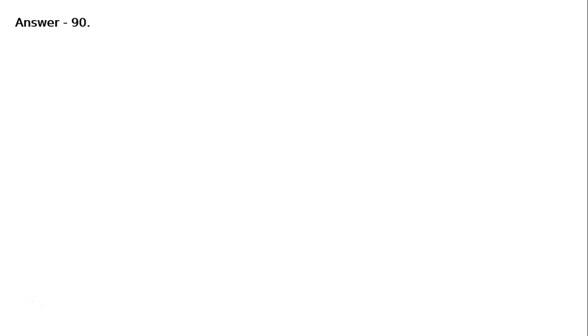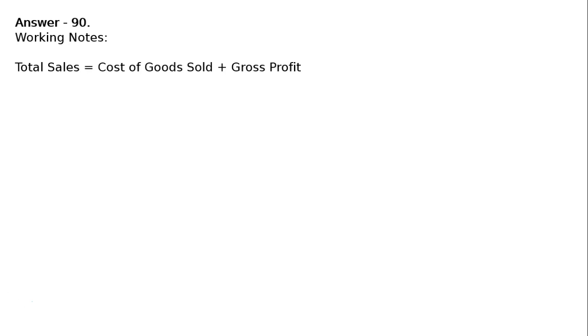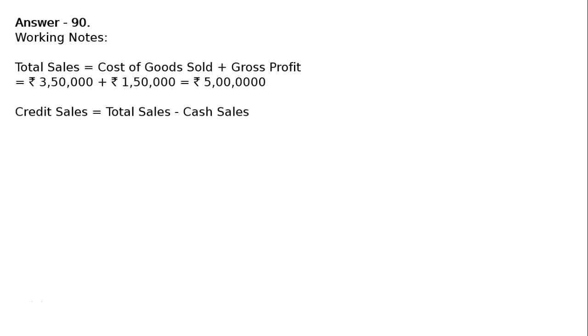The question: cash revenue from operations is rupees 2 lakh, cost of revenue from operations (cost of goods sold) is rupees 3 lakh 50 thousand, gross profit is rupees 1 lakh 50 thousand, and trade receivable turnover ratio is 3 times. Calculate opening and closing trade receivable for each of the following alternative cases. Working note: total sales = cost of goods sold + gross profit = rupees 3 lakh 50 thousand + rupees 1 lakh 50 thousand = rupees 5 lakhs.